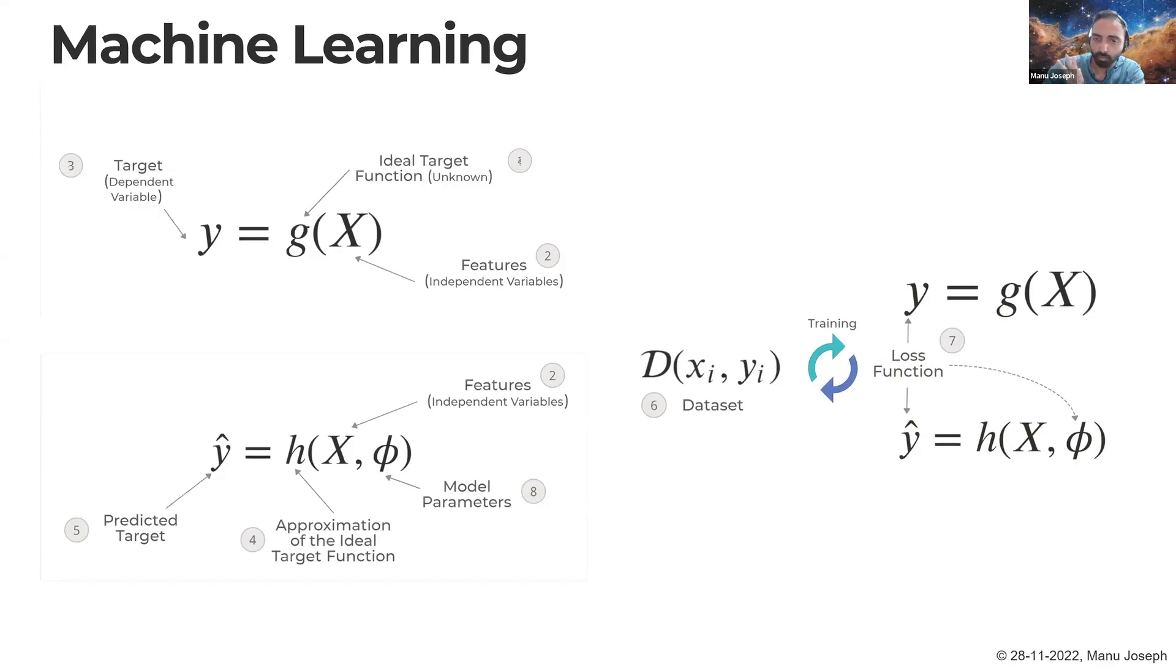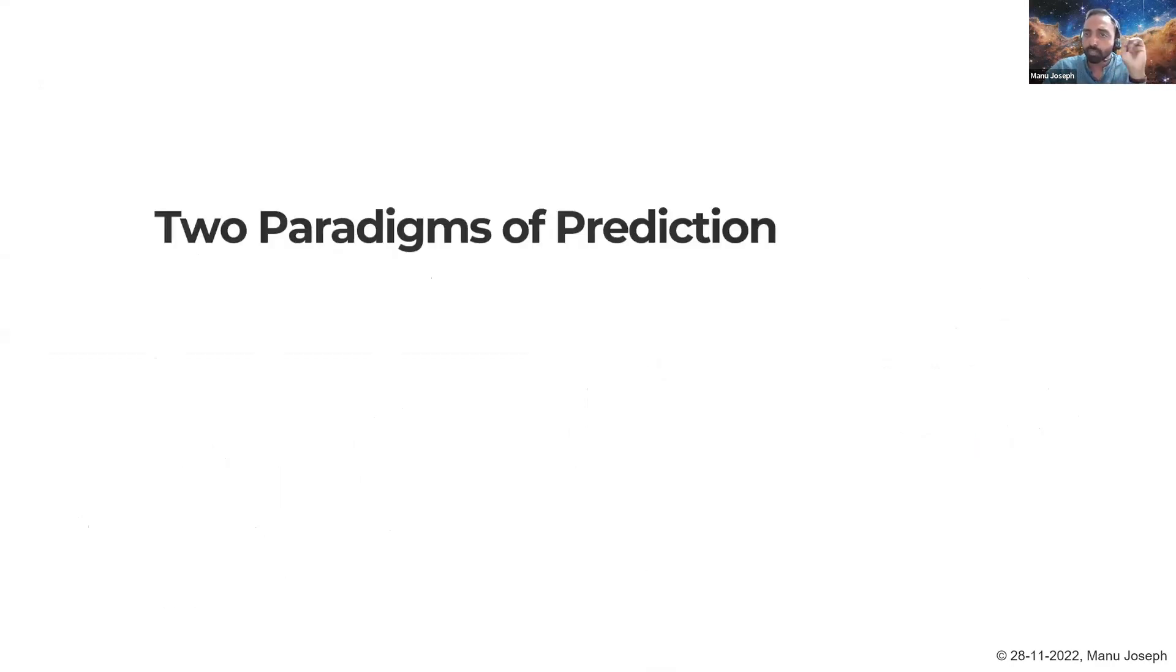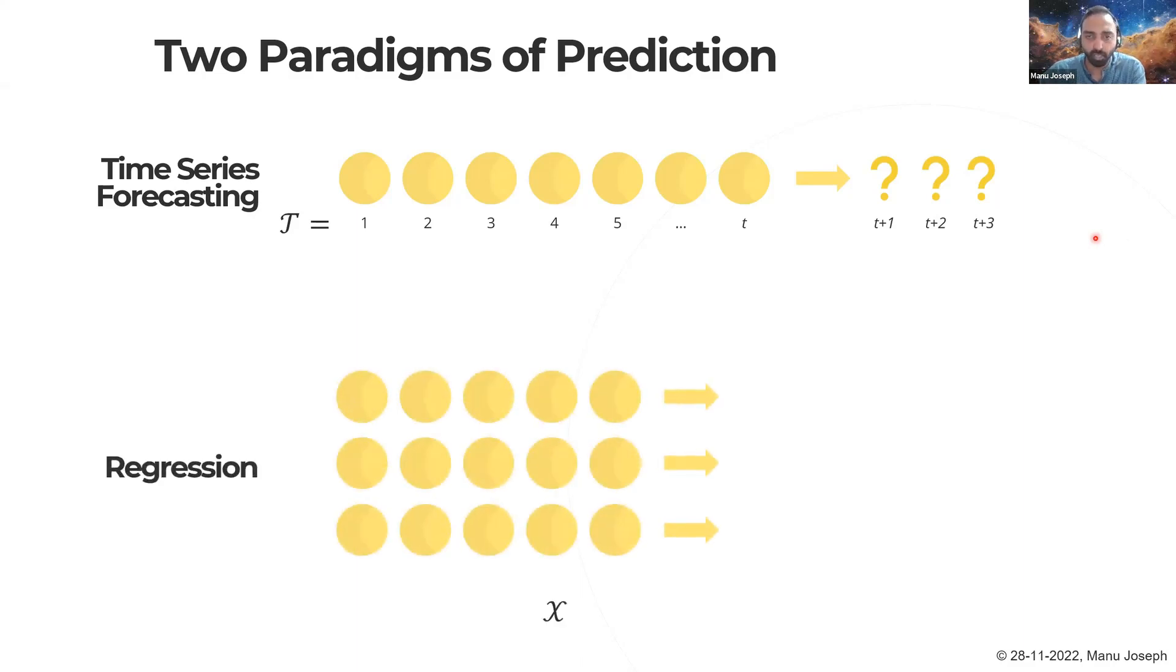Now you've seen these two different paradigms of prediction. One is time series forecasting in which we have a sequence of values ordered in time, and our task is to predict what is t+1, t+2, and t+3 and so on. That is the standard time series forecasting paradigm. But we also took a detour and talked about machine learning.